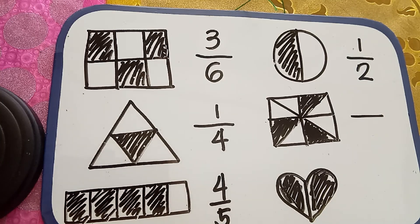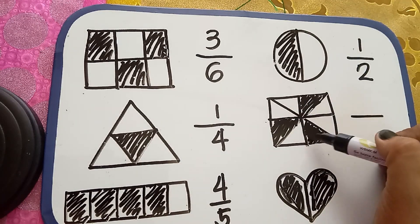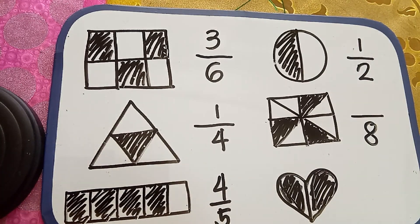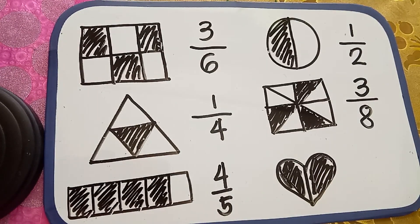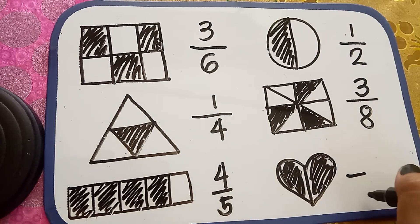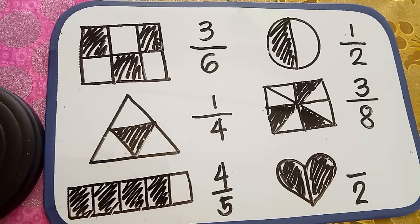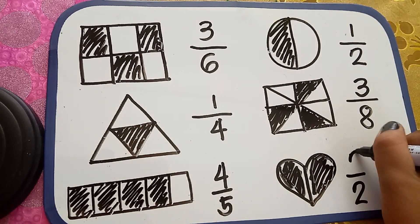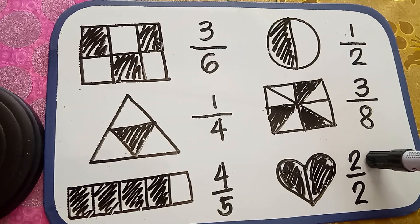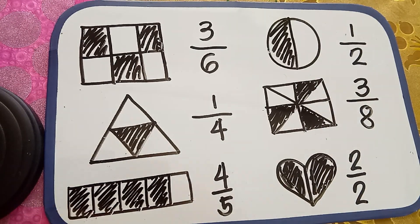On this example, let us find out how many parts this square was divided. One, two, three, four, five, six, seven, eight. So eight is our denominator. How many parts were shaded? One, two, three. Three is our numerator. Take a look at this last example — it is different from the other examples. This heart is divided into how many parts? One, two. So two is our denominator. How many parts were shaded? One, two. Two parts were shaded. When we have the same number of numerator and denominator, it means it is equal to one or one whole.